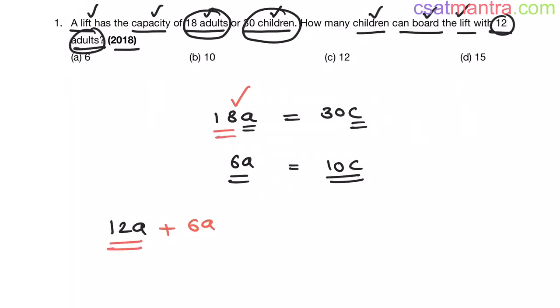There are 12 already. Now we can board 6 more. Now we have 12 adults. This 6 adults weight is equal to 10 children my friends, 10 children's weight. So we can board 10 children with 12 adults. So our answer is B.